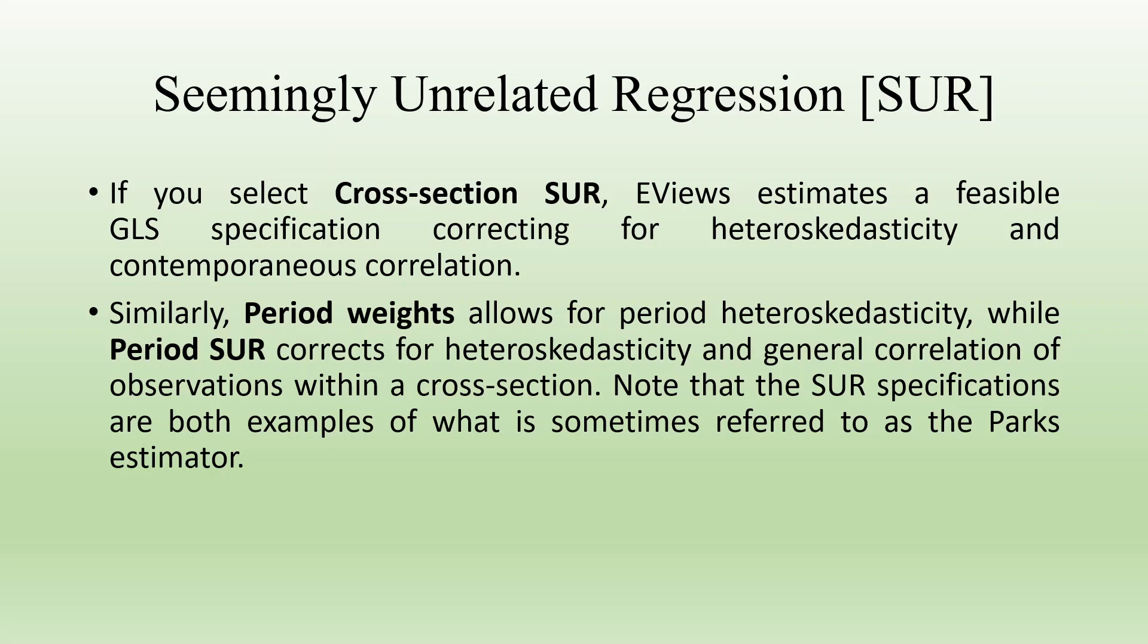Similarly, period weights allow for period heteroscedasticity while period SUR corrects for the heteroscedasticity and general correlation of observations within the cross-section. Note that seemingly unrelated regression specifications are both examples of what is sometimes referred to as a PARCS estimator.